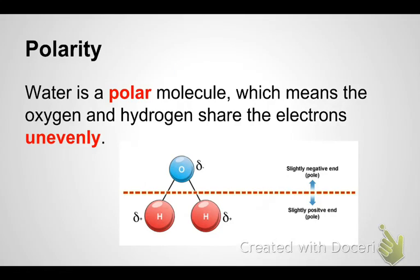Now that tendency of oxygen to be more negative and hydrogen more positive is what we call polarity. So water is a polar molecule, which means the oxygen and hydrogen share the electrons unevenly. The red words are the ones that you need to fill in for question number one.